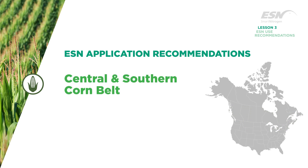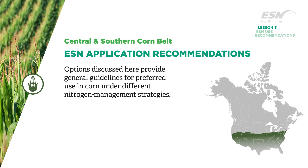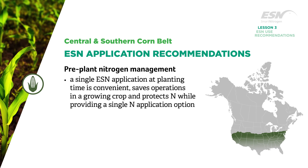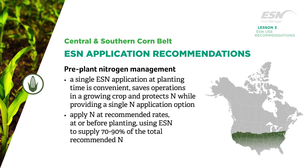For corn applications in southern geographies south of I-80, the options discussed here provide general guidelines for preferred use under different nitrogen management strategies. For pre-plant nitrogen management, a single ESN application at planting time is convenient and saves operations in a growing crop, protecting nitrogen while providing a single N application option. Apply N at recommended rates at or before planting, using ESN to supply 70 to 90 percent of the total recommended nitrogen.